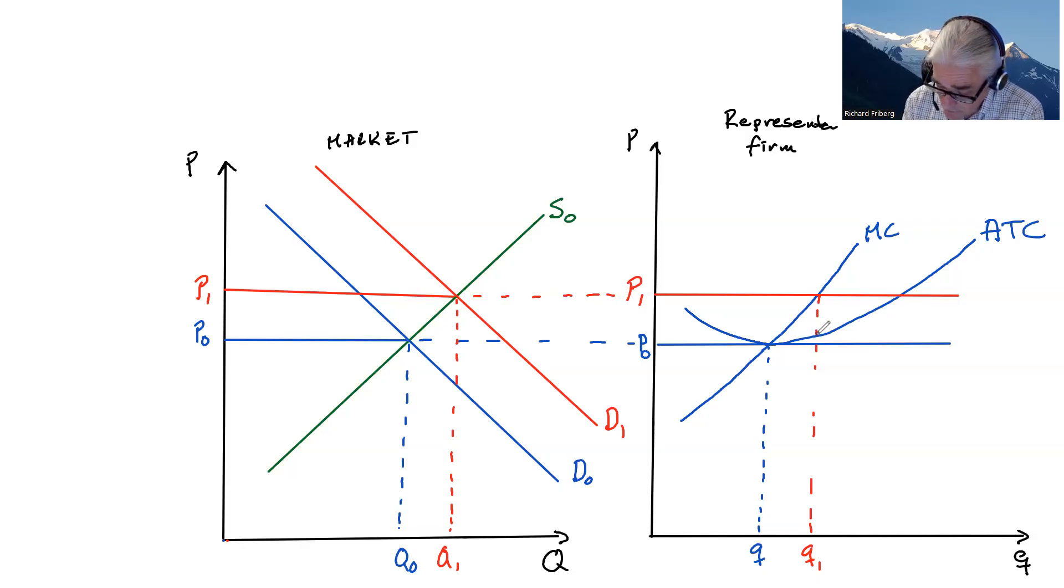At this point, what do we know? Well, we know that as usual, profits are equal to price minus average total cost evaluated at the quantity at which the firm is producing. So the individual firm, or the representative firm, is here making a profit. In the short run, there could be profits. This is a price taking firm.